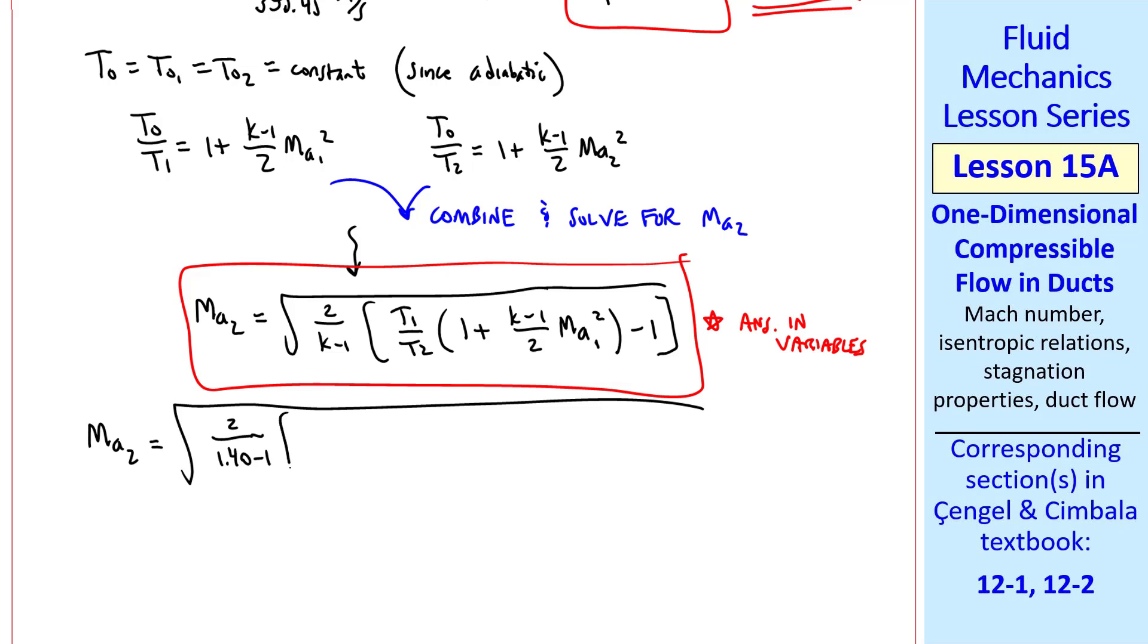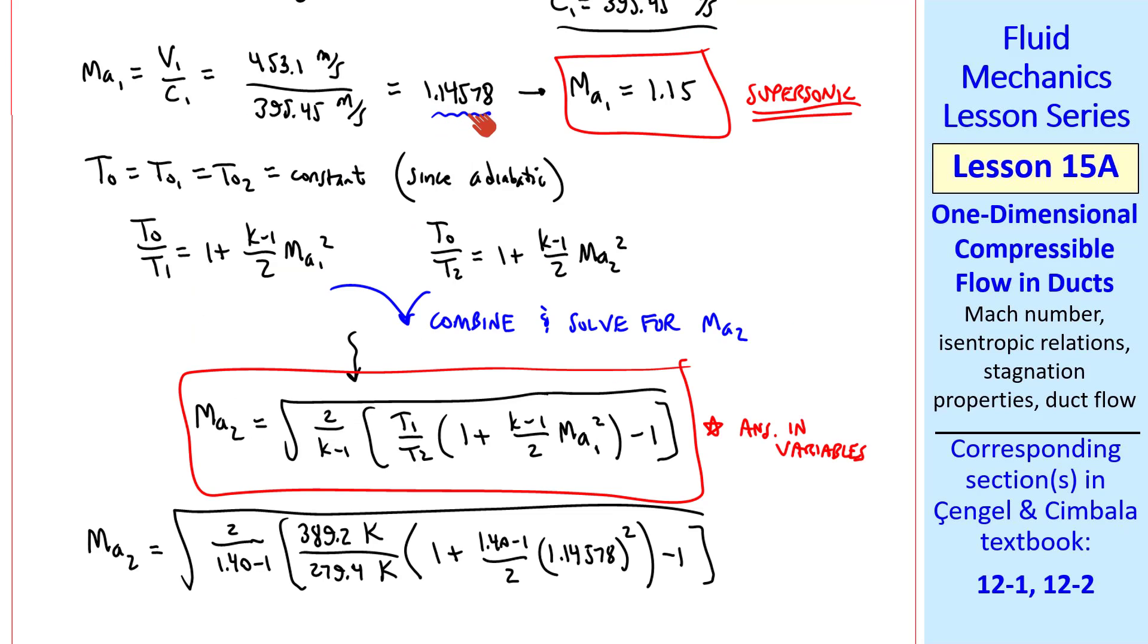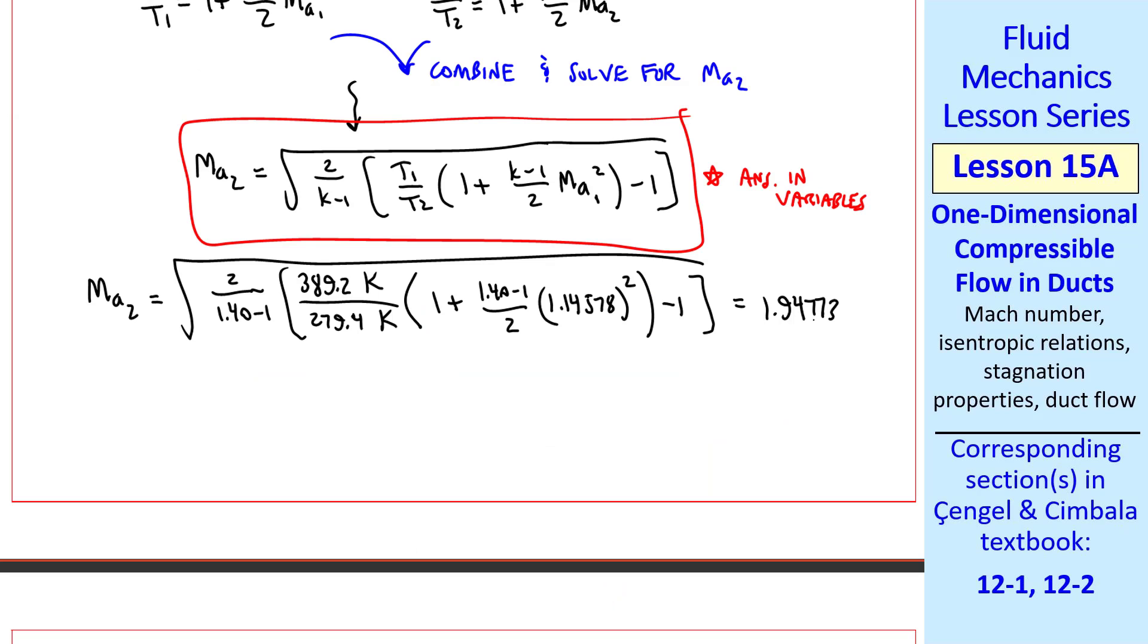Plugging in the numbers, 2/(k-1), the two temperatures which were given, 1 plus (k-1)/2 Ma1 squared, minus 1. Note that I use several digits here to avoid roundoff error. I get 1.94773, so Mach number 2 is 1.95 to three digits.